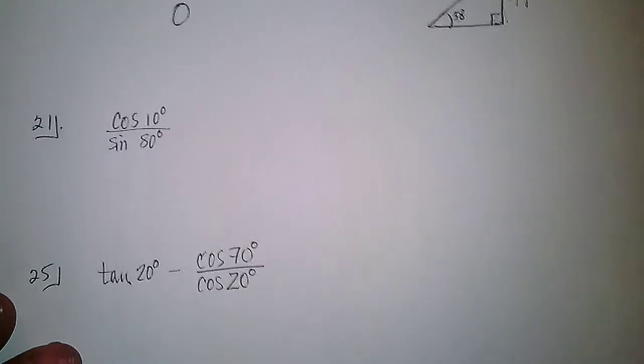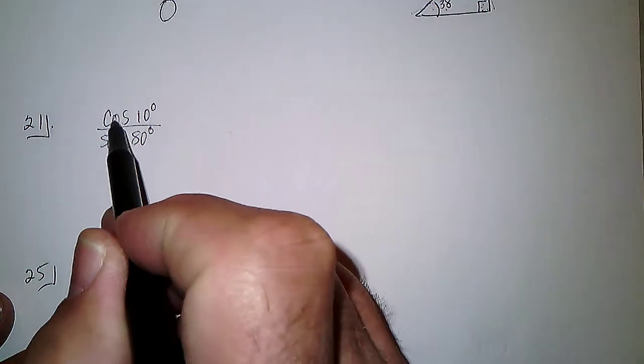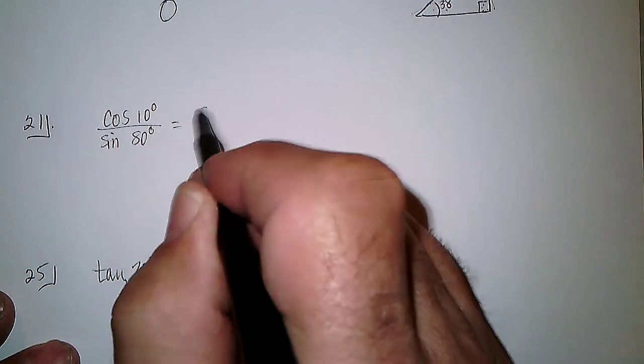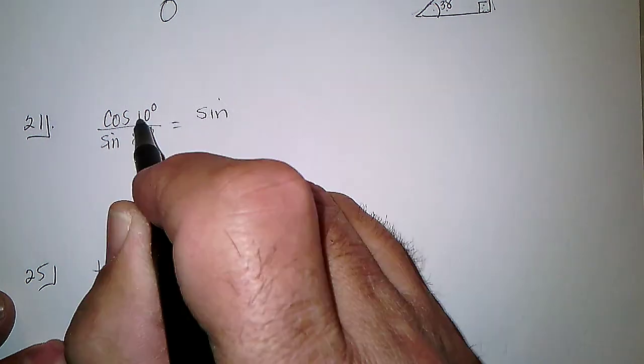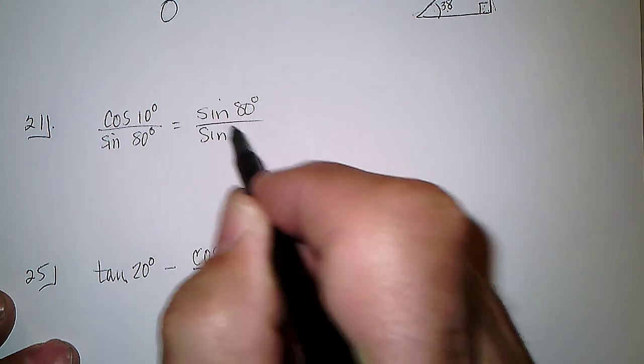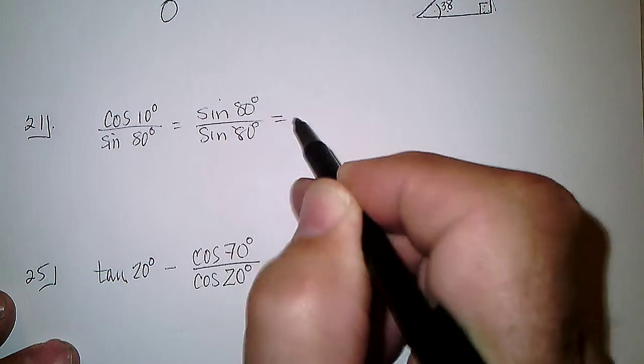So using that idea in 21, the cosine of 10 is equal to the sine of 10 from 90, 80. So we've got the sine of 80 over the sine of 80, which is 1.